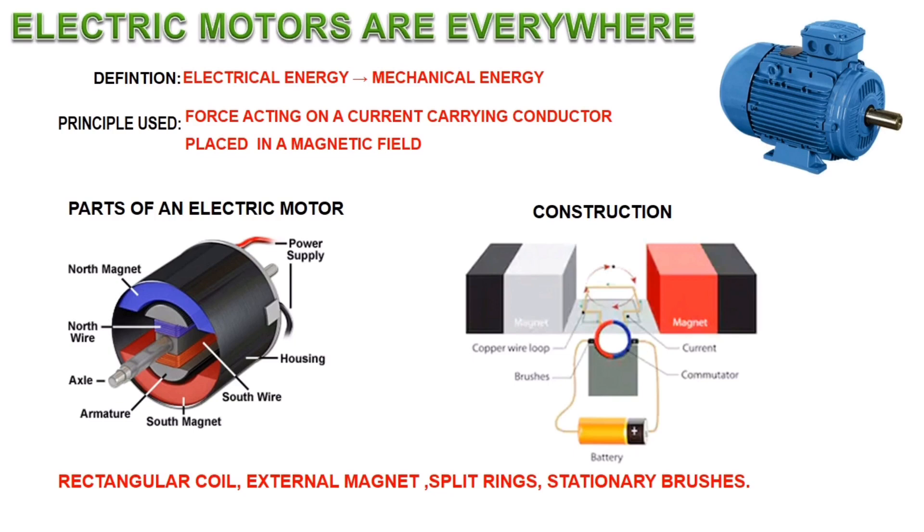Here you can see the parts of an electric motor and its construction. The parts consist of a rectangular coil AB of insulated copper wire, an external magnet, split rings, stationary carbon brushes, and an axle. Construction: A rectangular-shaped conducting coil is placed between the poles of an external horseshoe magnet. The ends of the coil are connected to the two halves of the split rings P and Q. The inner sides of the rings are insulated and attached to an axle. The external conducting edges of P and Q touch two conducting stationary brushes X and Y.